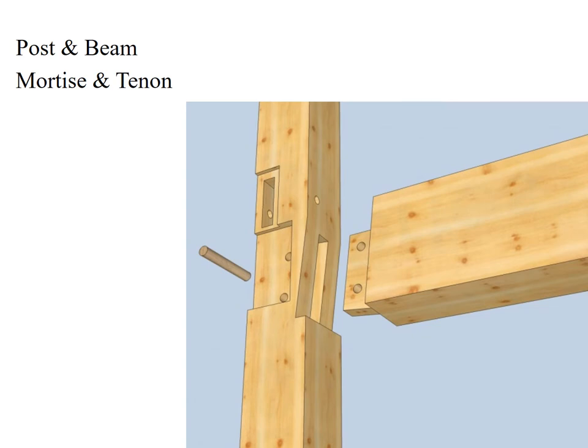This is post and beam, mortise and tenon construction. The post is the vertical part, the beam is the horizontal part. The tenon is the part that sticks into the mortise, and then you peg it. This construction from 1877 is before any kind of power tools. This kind of construction is still carried on today in large timber frames — not in fast expedient construction — and is also something you see in Japanese architecture quite a bit.